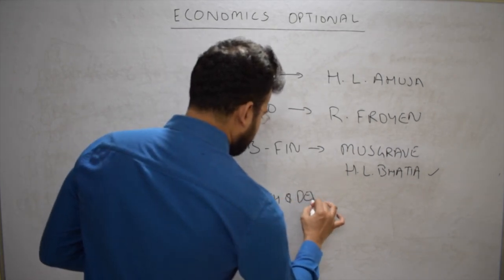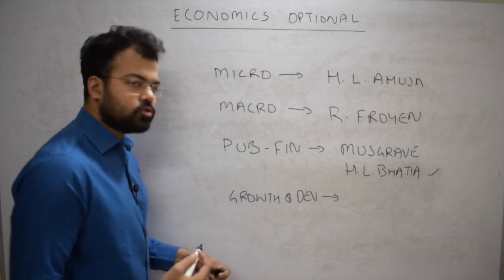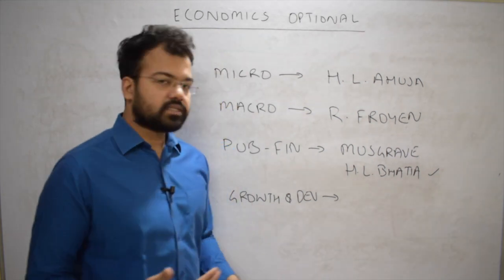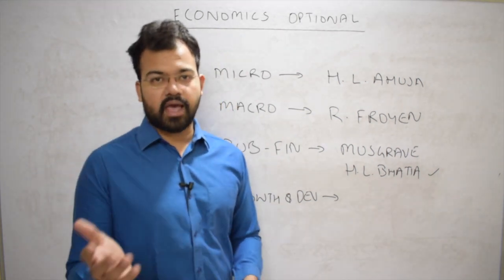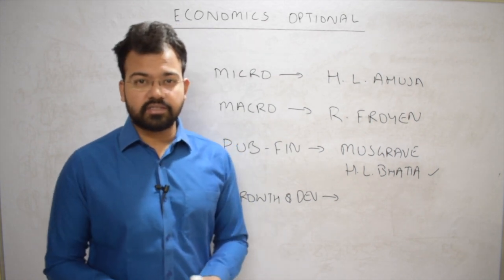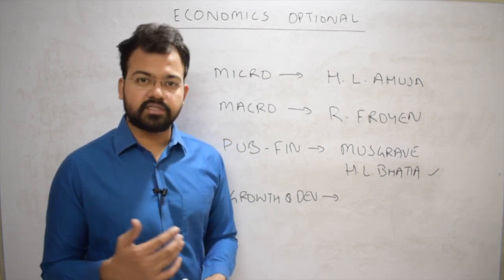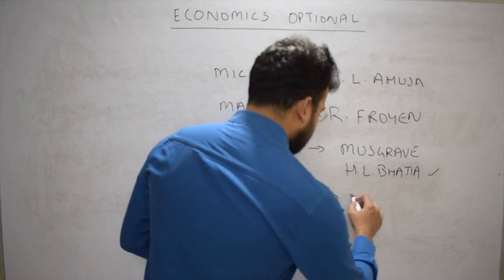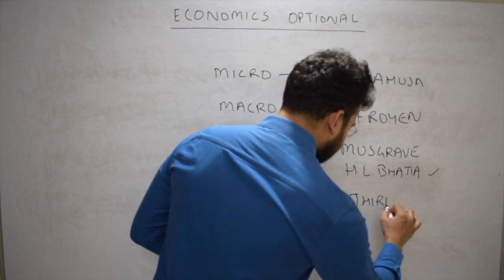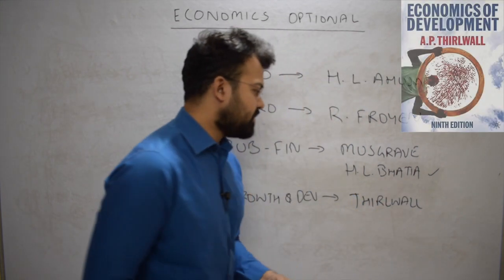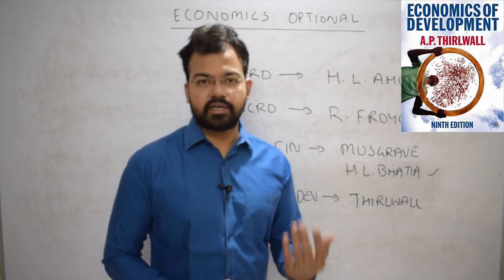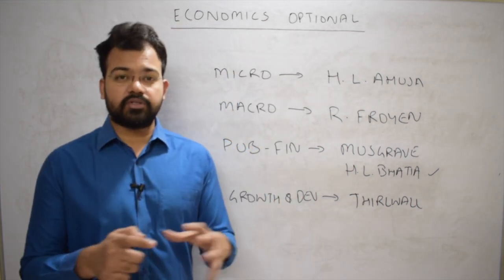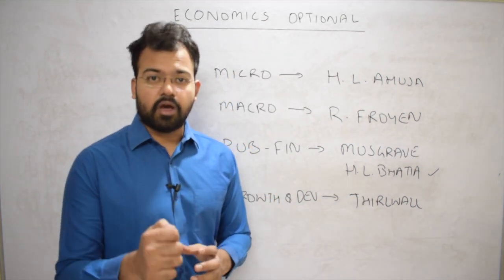For growth and development, the two most famous books are Todaro and Thirlwall. You can refer to either — just go to a bookshop, flip through the pages, and go with whichever you feel comfortable with. I would recommend A.P. Thirlwall, which is written comprehensively, but again you need to pick only the topics that coincide with the economics optional syllabus.